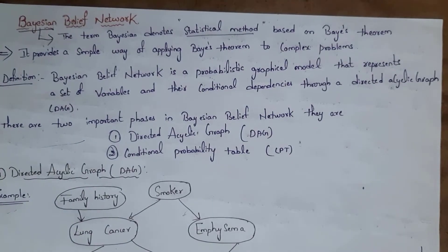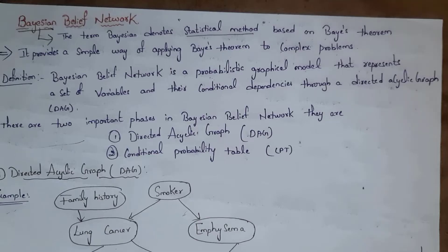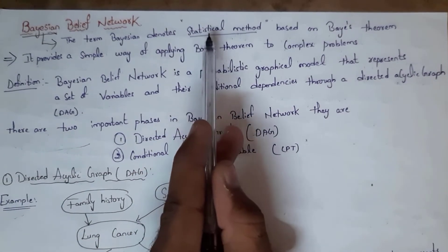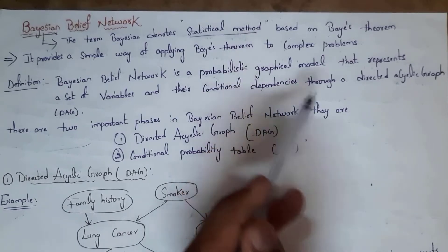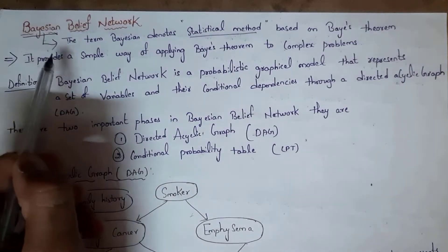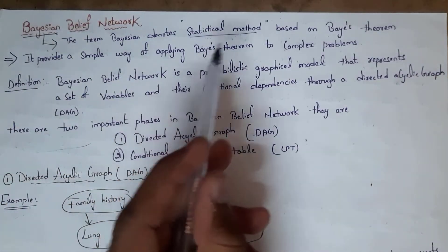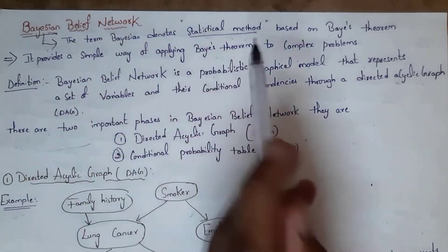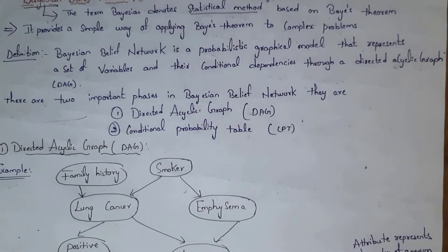Welcome to this video on Bayesian Belief Networks in data mining. The term Bayesian denotes a statistical method where we represent complex data in a simple format, and it is based on Bayes' theorem. A Bayesian Belief Network provides a simple way of applying Bayes' theorem to complex problems.